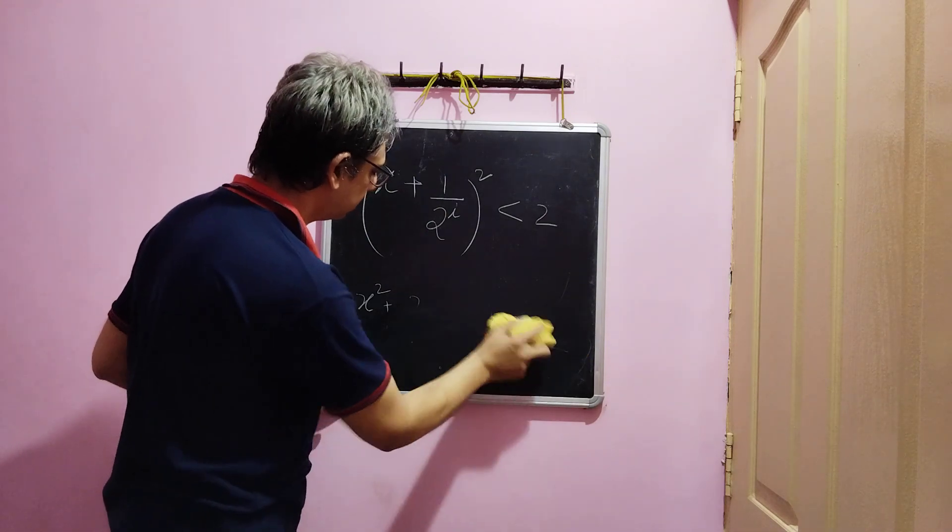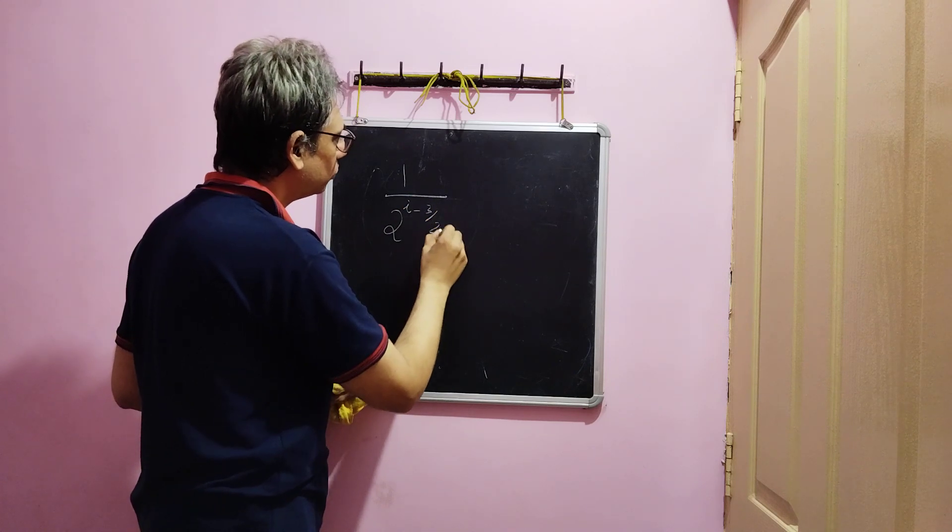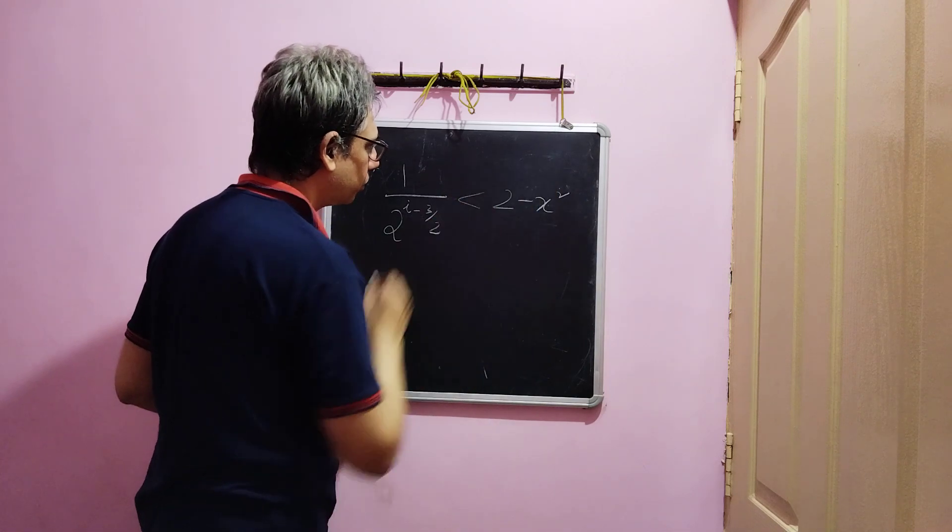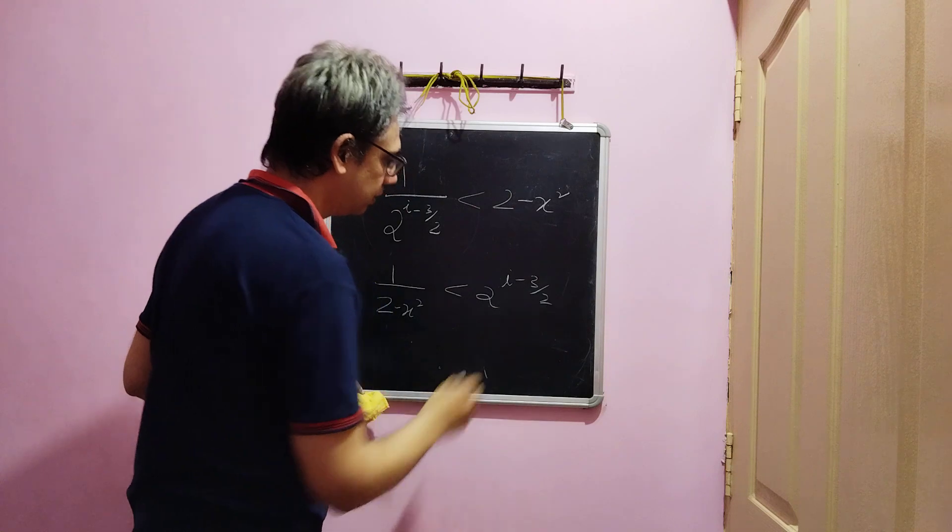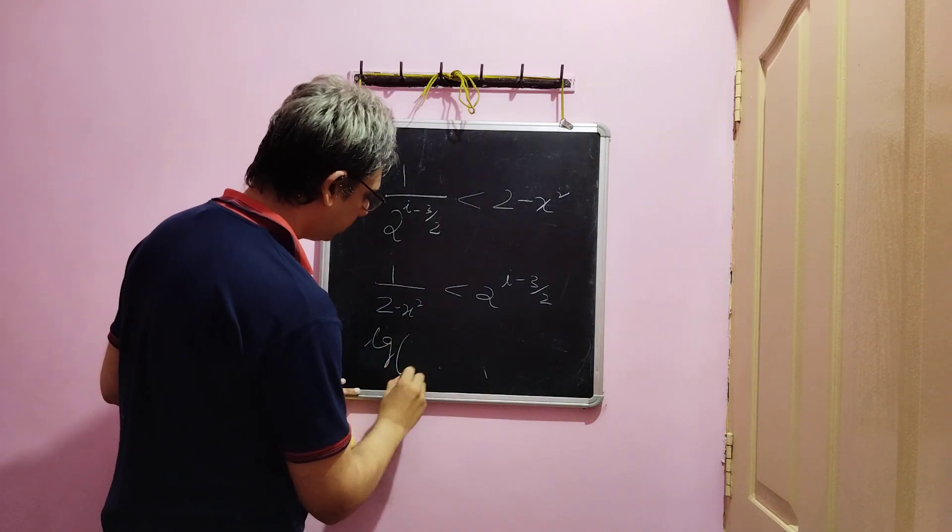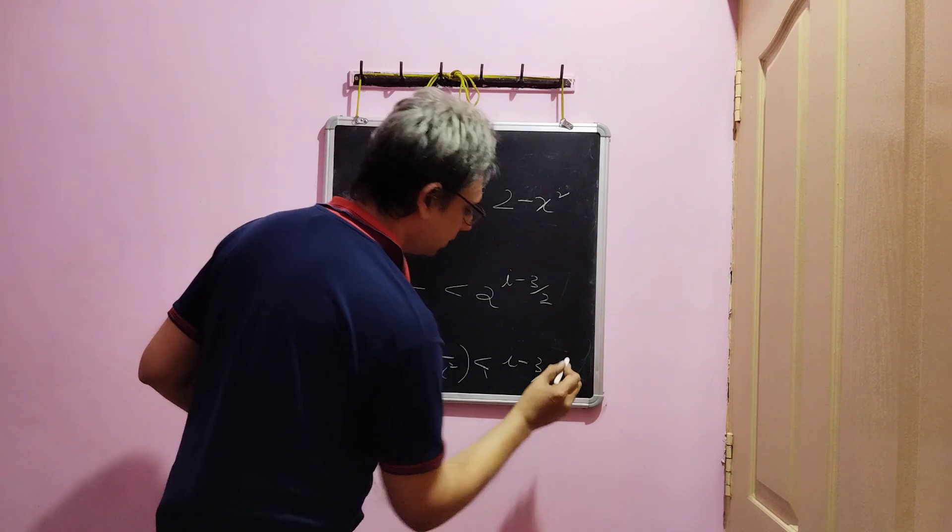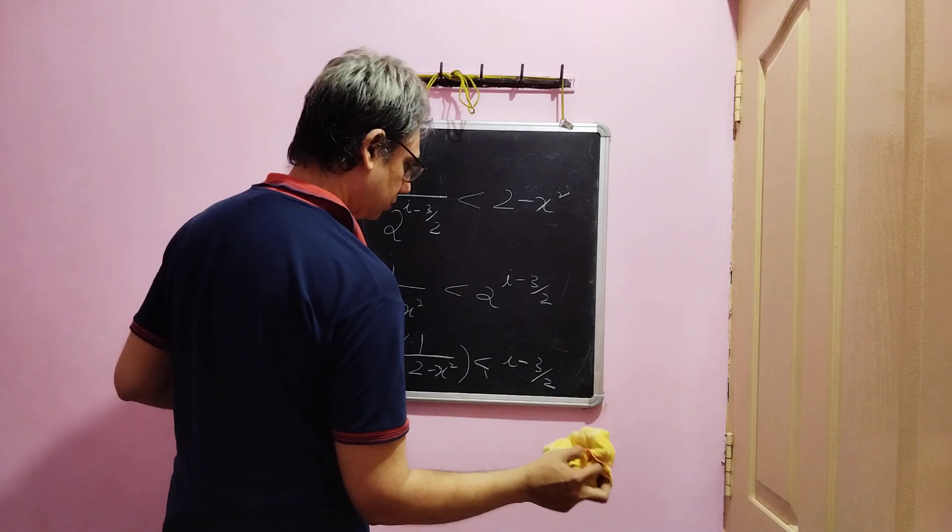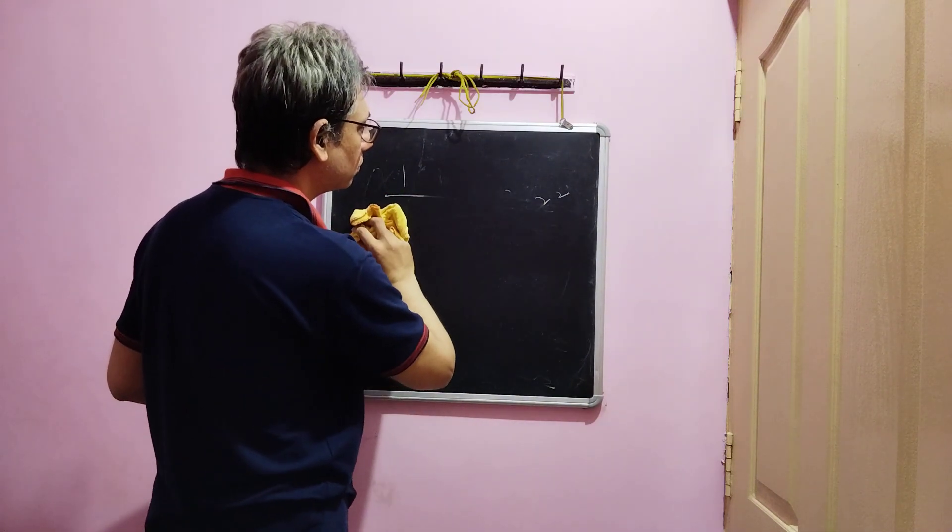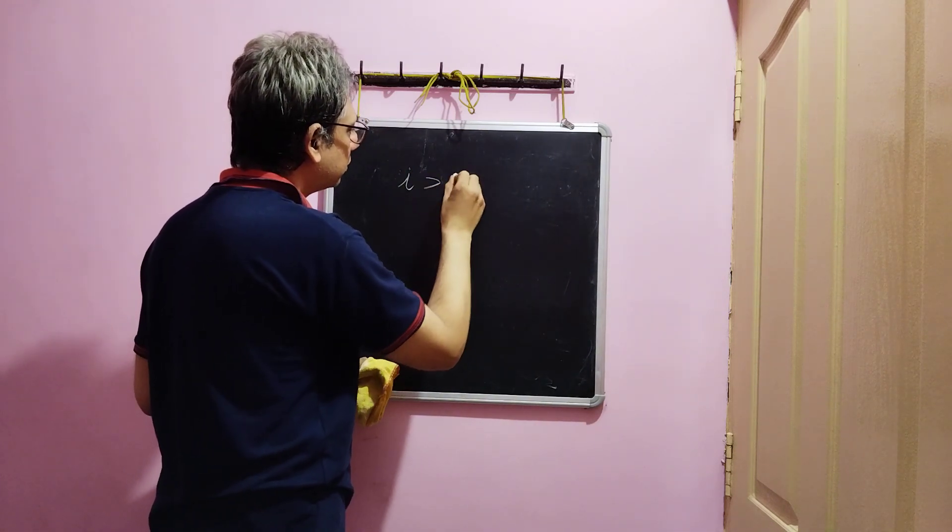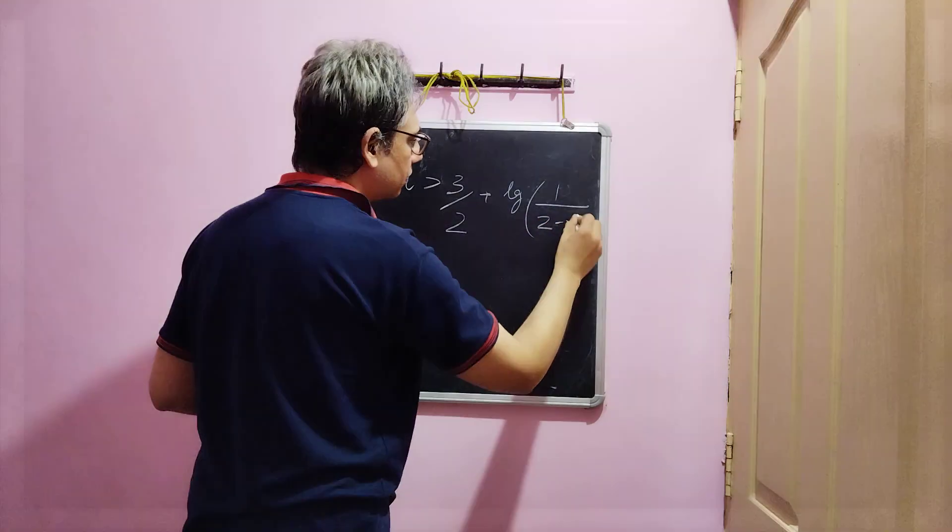If i is reasonable, if we assume a reasonable value for i, then this will be very small and we can replace this by root 2 itself. Then we will get 1 by 2 power i minus 3 by 2 is less than 2 minus x square. Therefore, i is greater than 3 by 2 plus the log of 1 by 2 minus x square.